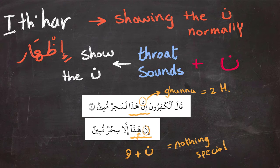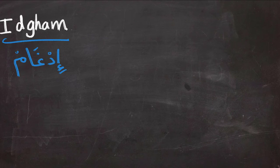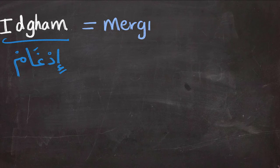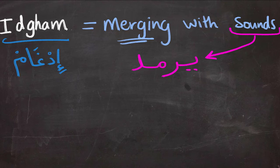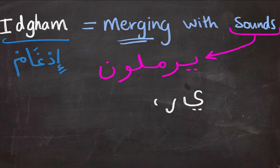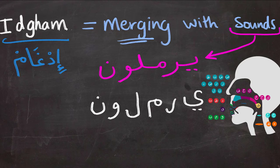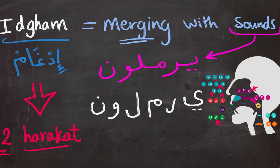Now Idgham — it is the opposite of Idhaar, because here the Nun will be merging or assimilating with sounds coming after it. These sounds form the word 'Yarmaloon': Ya, Ra, Meem, Lam, Waw, and Nun. They come from a much closer place to where you pronounce the Nun, so merging is very possible. Idgham also involves two harakat.